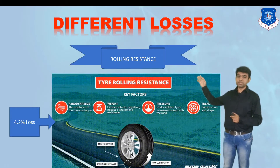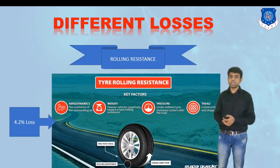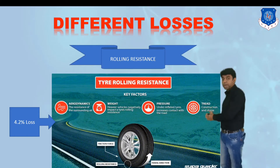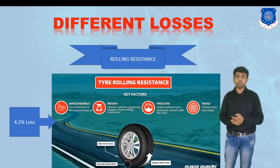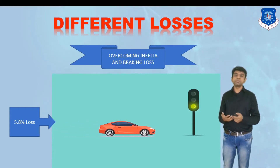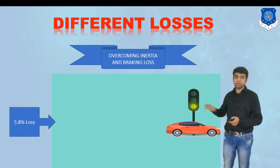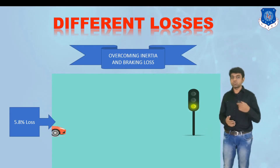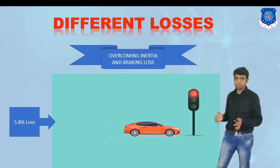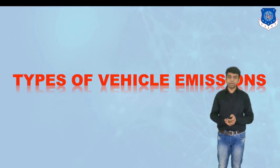Another loss is rolling resistance — the wheel traveling on the road surface — accounting for about 4.2%. This is largely unavoidable, but better tire and brake design can lower this number. The last loss is overcoming inertia and braking loss. Whenever you stop at a signal and apply the brake, there is an inertia loss. When you restart, the initial torque requirement is higher, resulting in a 5.8% efficiency loss during that period.